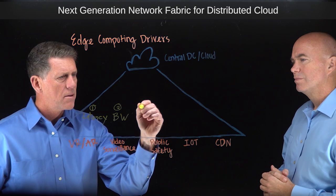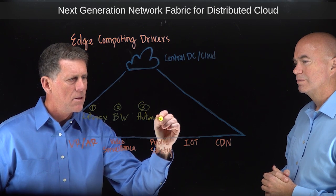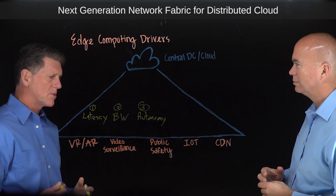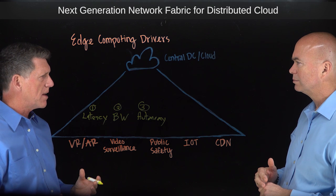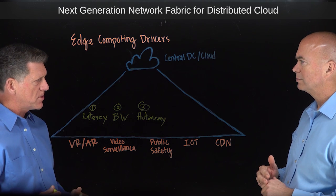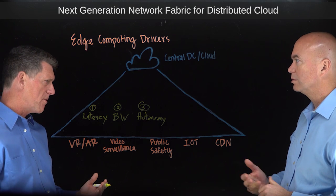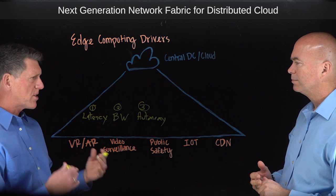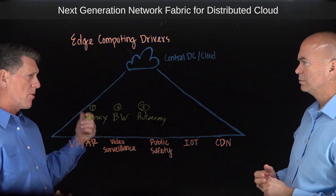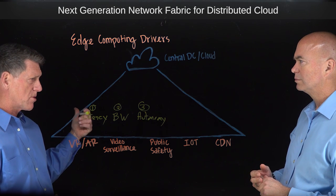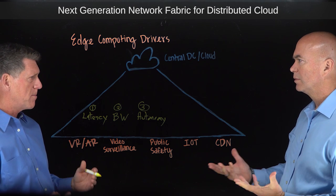The third one is autonomy. There are certain Internet of Things and other applications that, if they get severed from the central cloud, need to keep working. So public safety, oil refinery safety — you've got multiple actuators and sensors working together, and if they detect a problem, the latency back to a centralized cloud is bad, and if the connection's cut, you still need that safety mechanism to function.